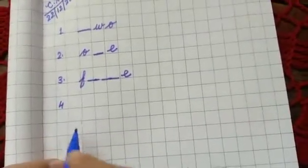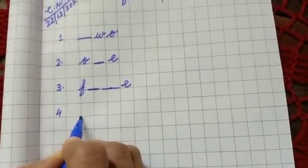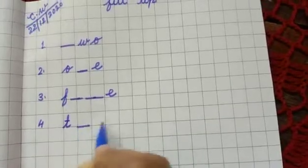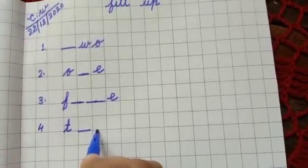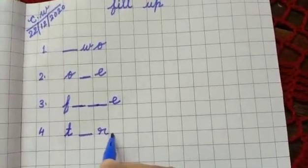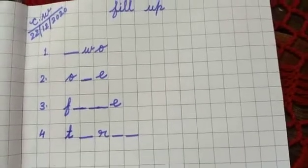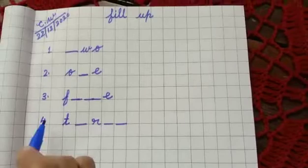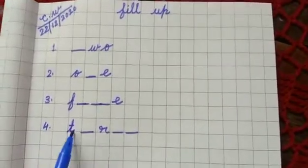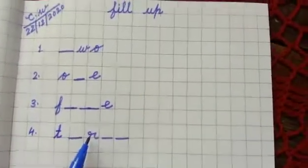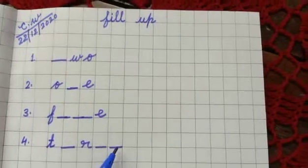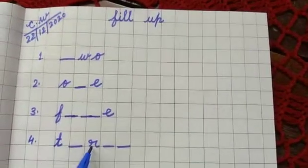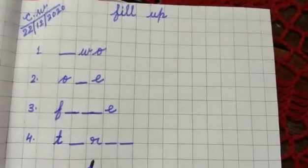Here, next number is T dash R dash dash. What you will write here? T H R E E, 3. Okay.